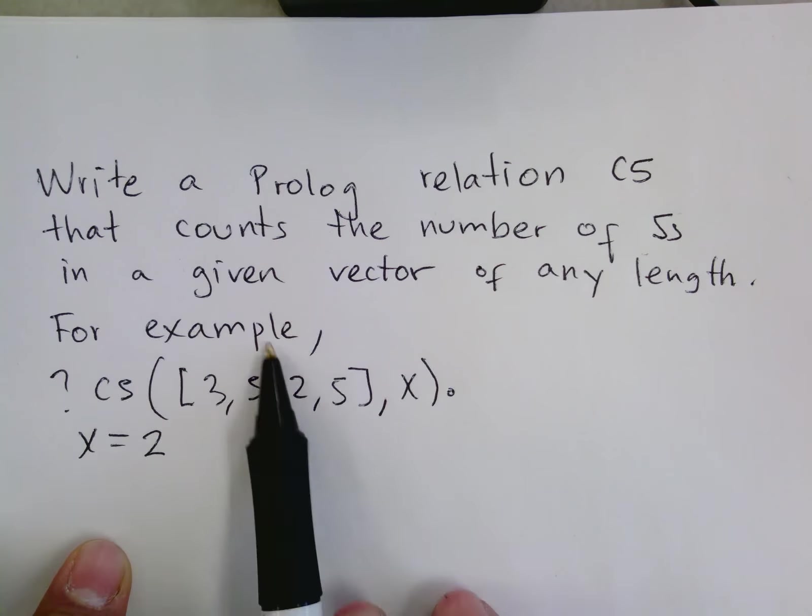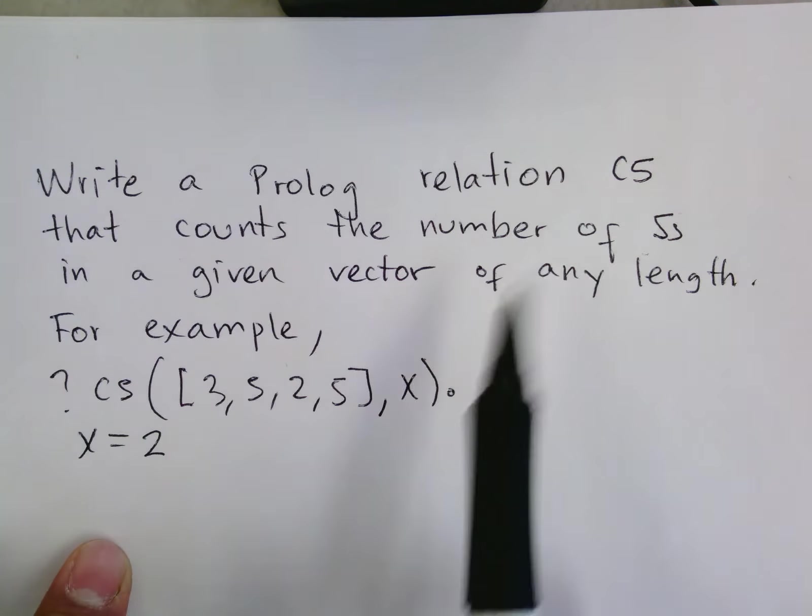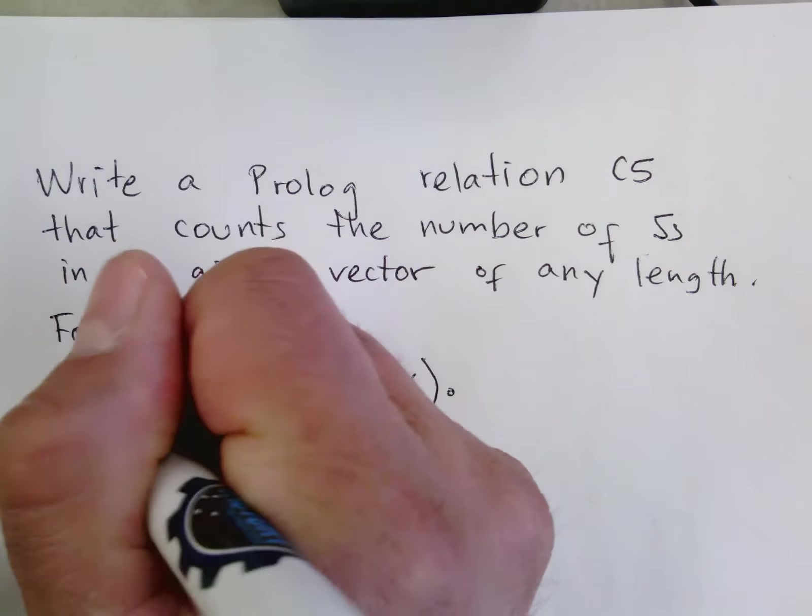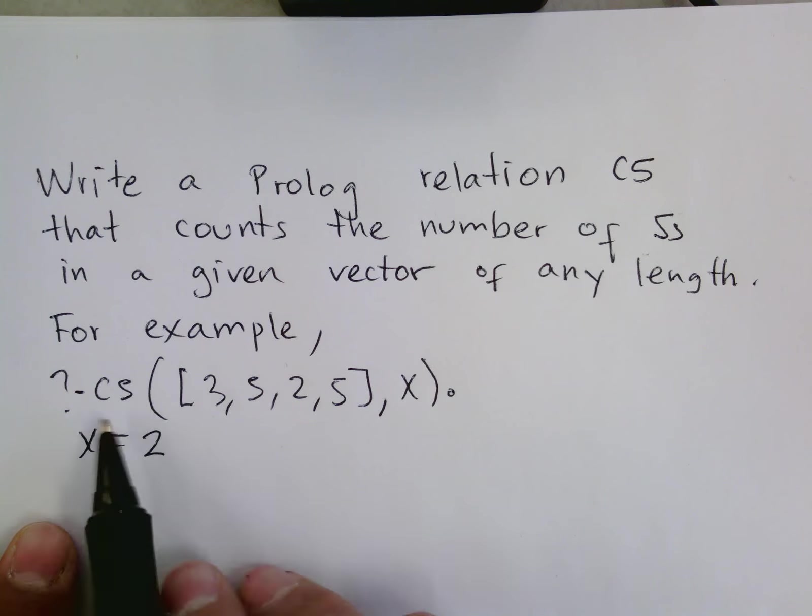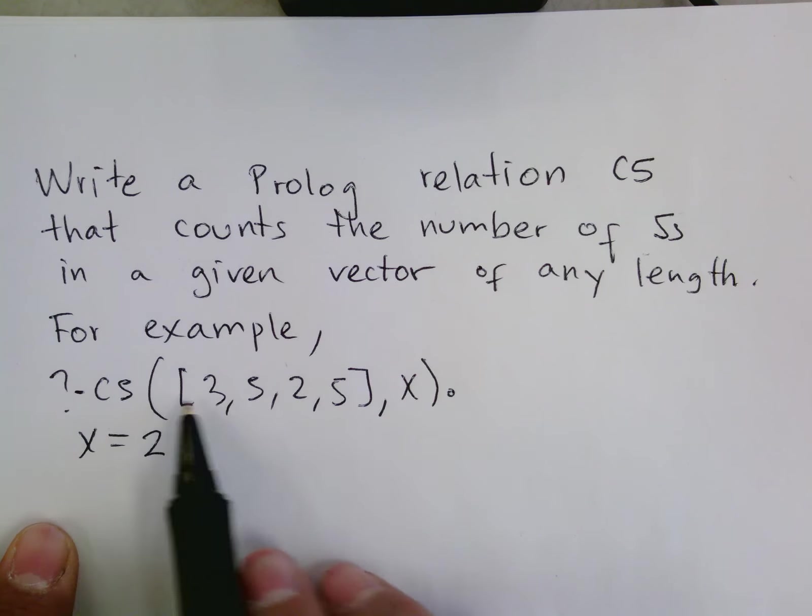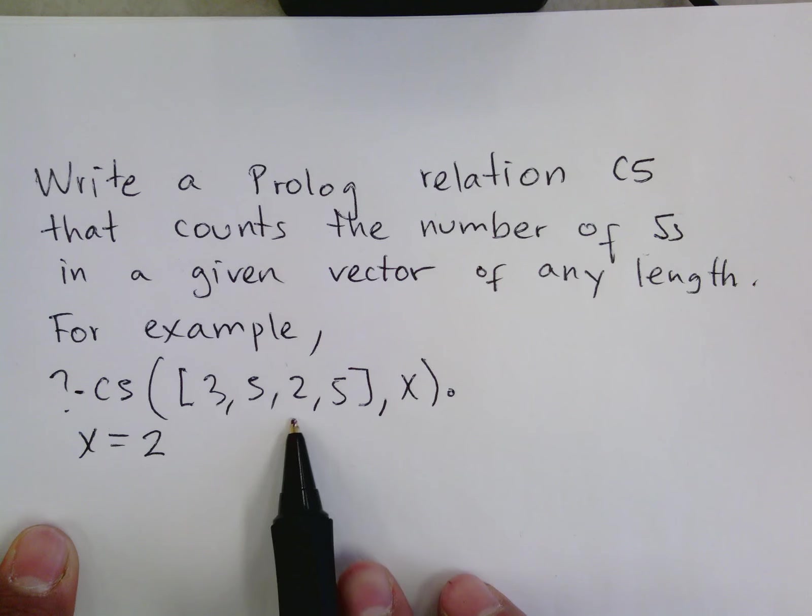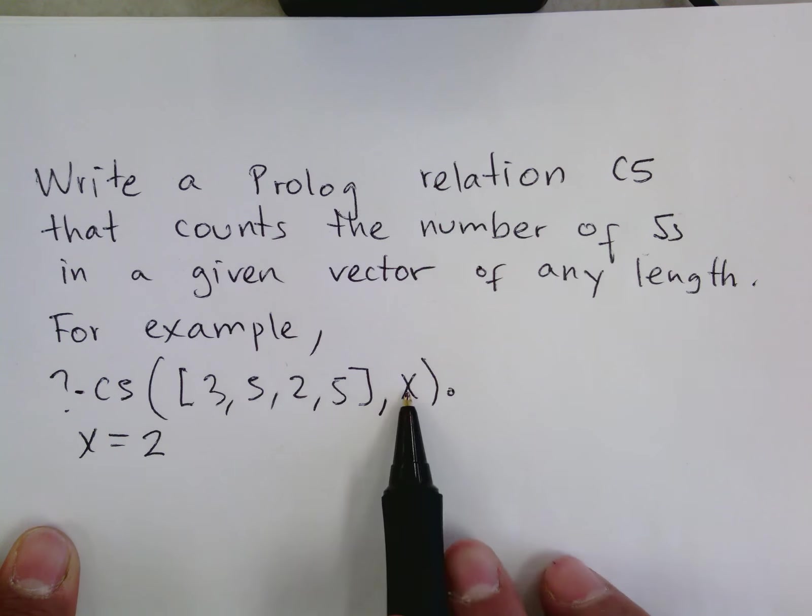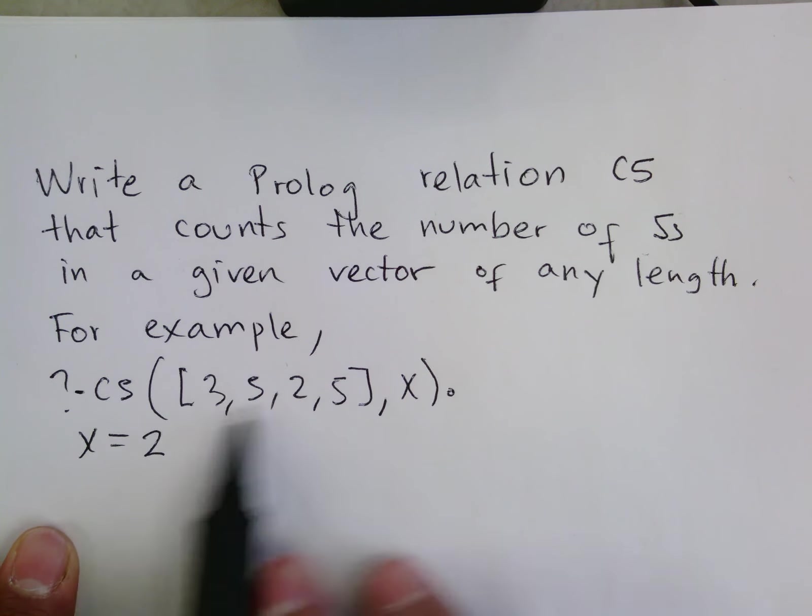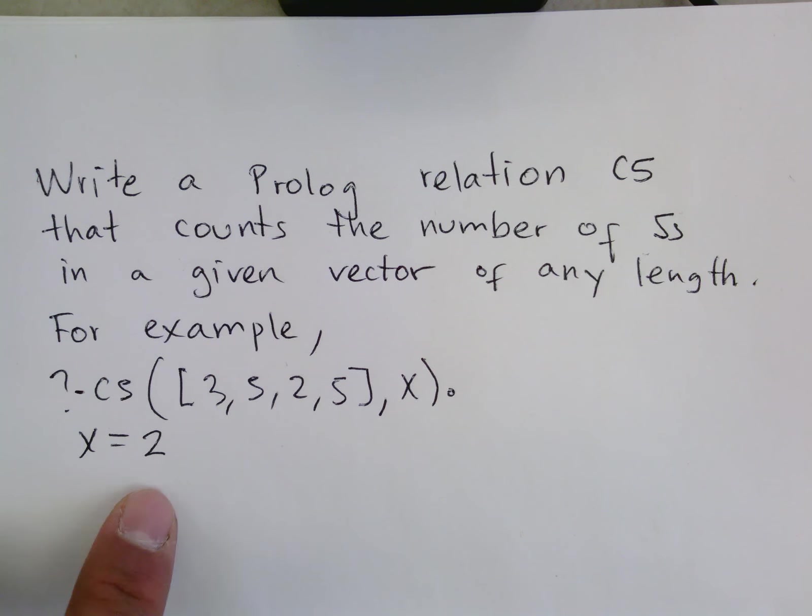So in this example of the possible execution of cs, we have the query prompt where we call cs with two parameters. The first parameter is the list, and in this list I want to get in X the number of 5s. I see that there are two 5s, so I am expecting that X is 2.